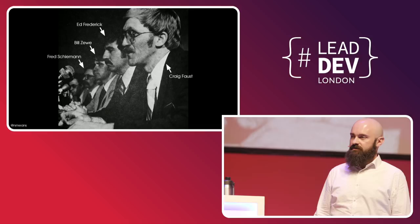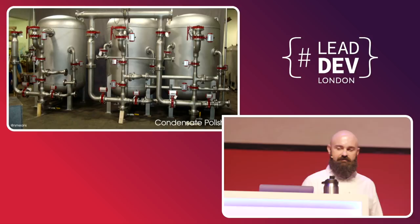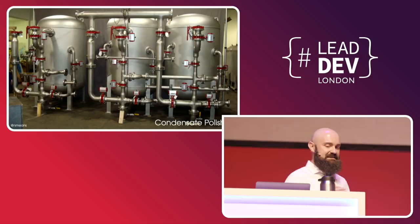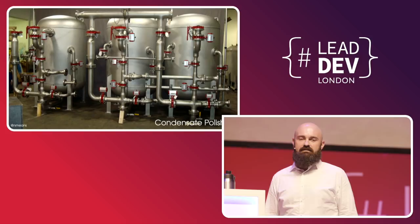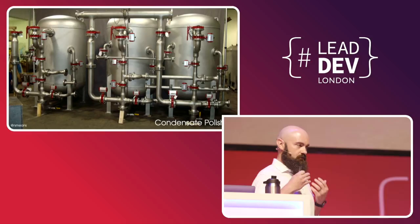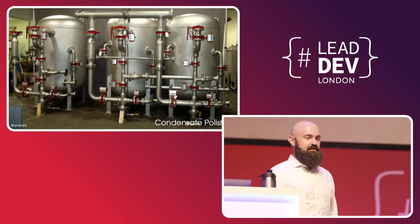The condensate polishers are a set of eight filtration tanks that filter the water coming out of the condenser before sending it back into the expensive and very delicate steam generators. The steam generators are made up of very tiny tubes, so if there's a fleck of rust or dirt that got into the water, it could clog up one of those tubes. The only way to unclog them is to take the steam generator apart and rebuild it. So it's very important that the water get filtered.